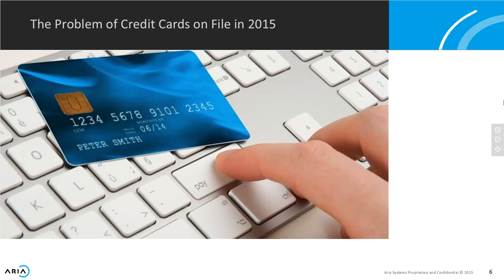One of the big problems — and there are two. If you take away two problems with credit cards on file, this has been particularly difficult in both 2014 and going into 2015. First, there's been a number of breaches. Many of you may have shopped at Target or Home Depot, had your card reissued and received it in the mail. Anyone with that payment information on file had to do something about it and get it updated.